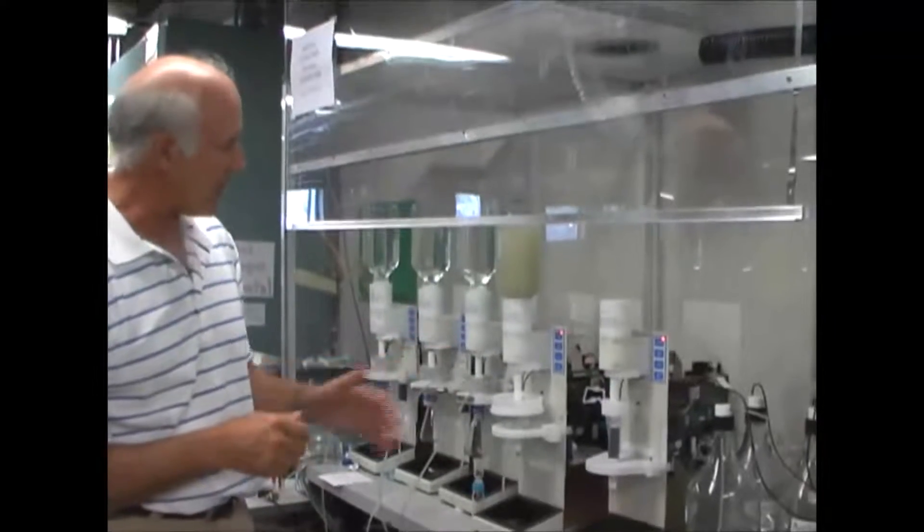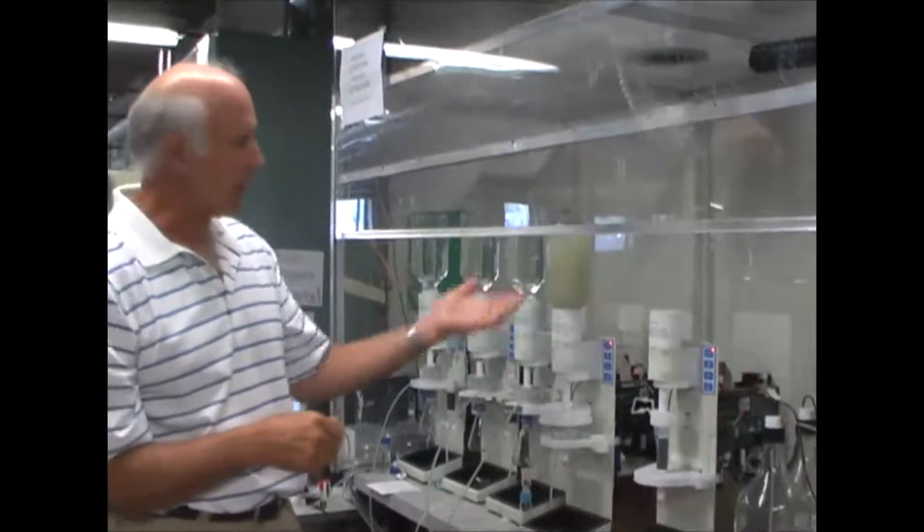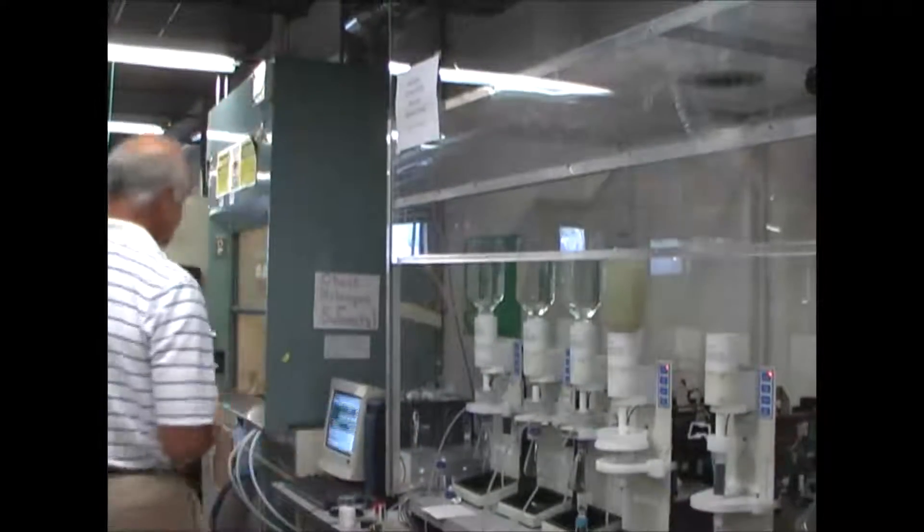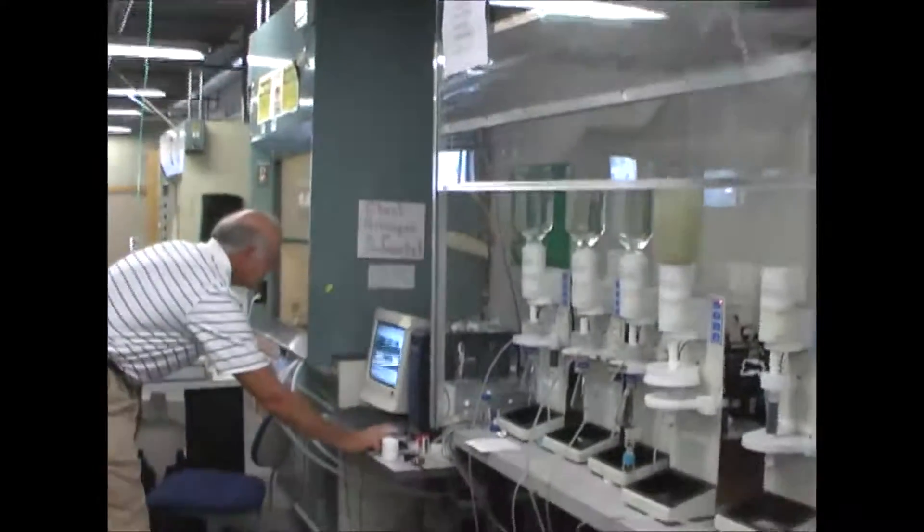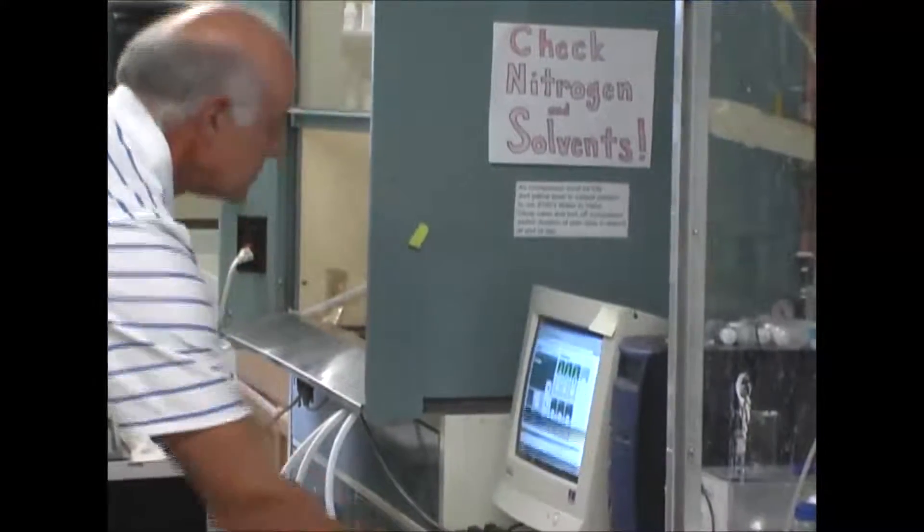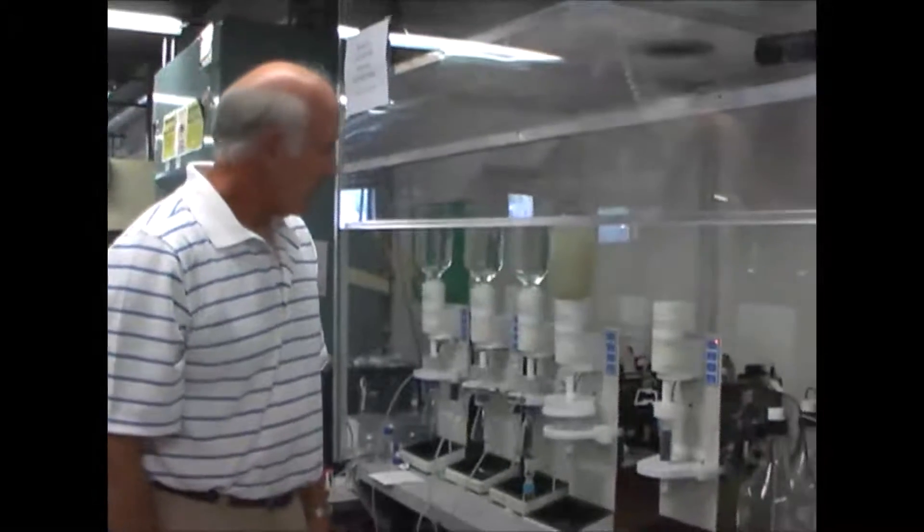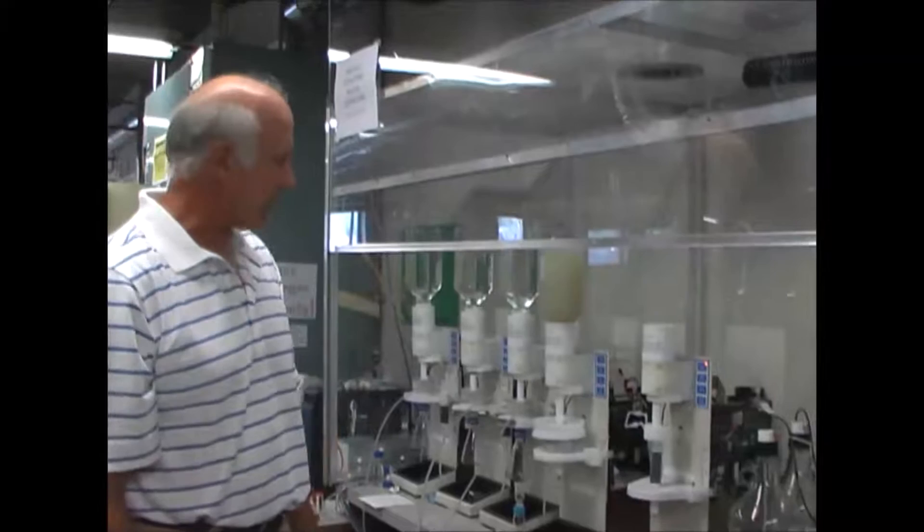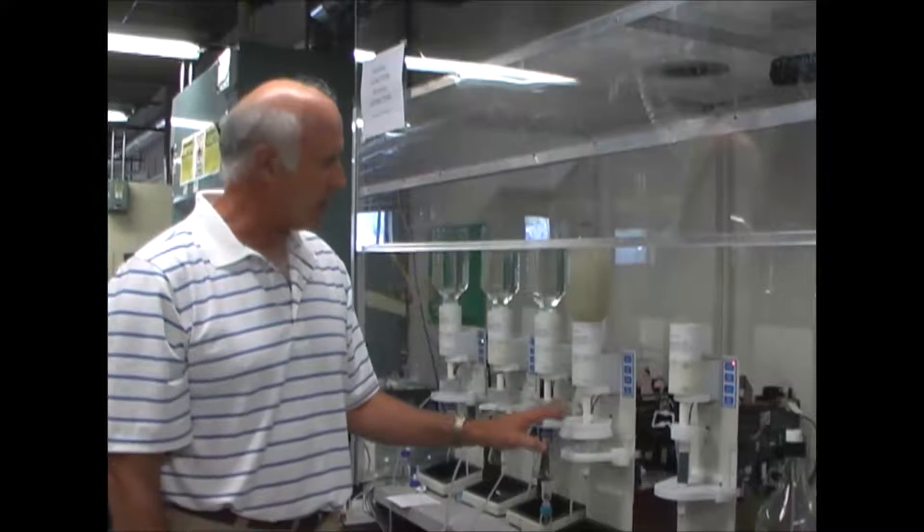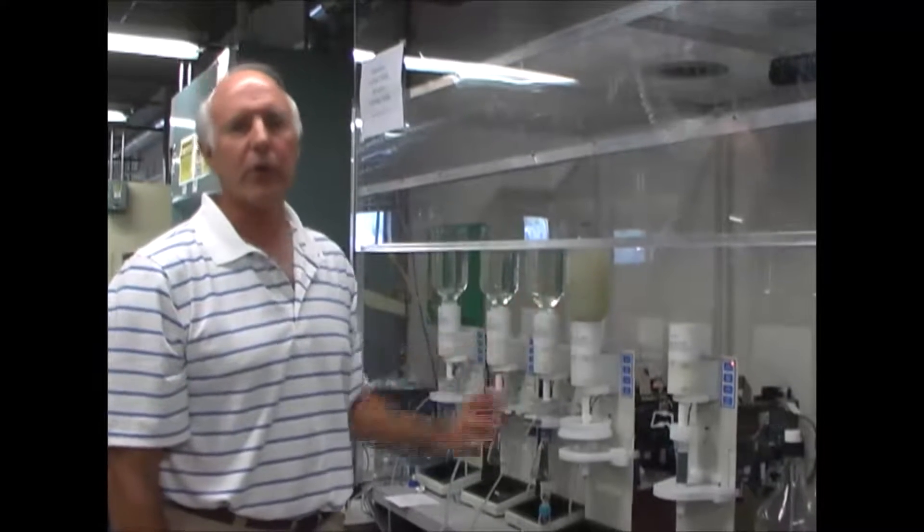I've got a demonstration method that I will run, and what we're really going to do is look at the time it takes to filter this sample. So I've started the extractor. The unit is going to deliver a pre-wetting solvent, which in this case is acetone. It's just going to condition the pre-filter and the disc, and once the disc is conditioned, we will immediately go into filtering the water sample.